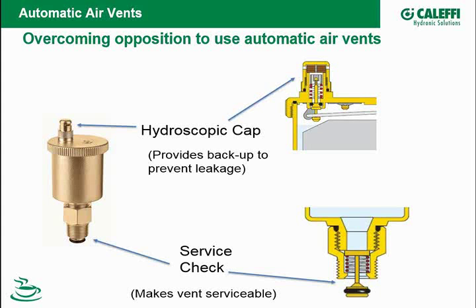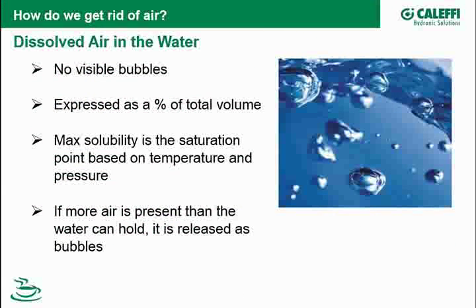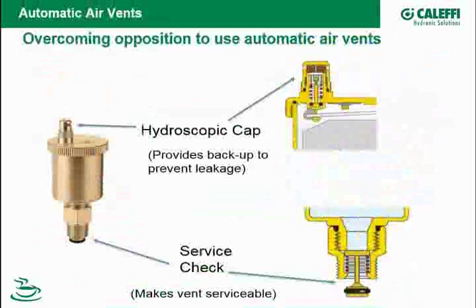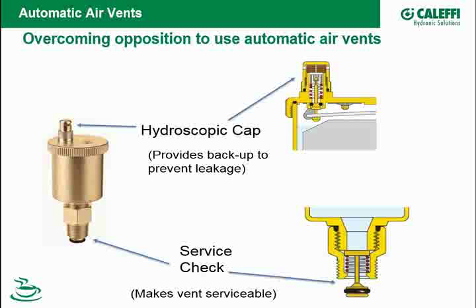Personally, I think most systems out there still need automatic air vents because of the way technology has gone. We do make an adapter for the top of that air vent if you want to put a copper tube on it and take it down to the floor or down to a drain. One excellent entry from last month had little copper tubes connected to every one of his air vents on top of the boiler — knowing that someday it could leak, putting a little copper tube down to the floor or a drain would make you sleep better at night.